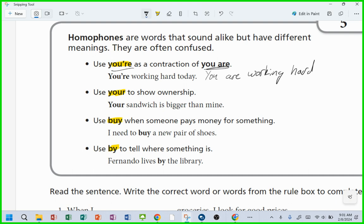How about your sandwich is bigger than mine? That's the possessive to show ownership, right? Your sandwich is bigger than mine. So you have you're, Y-O-U apostrophe R-E and your Y-O-U-R. Those are homophones spelled differently, sound the same, have different meanings, right?